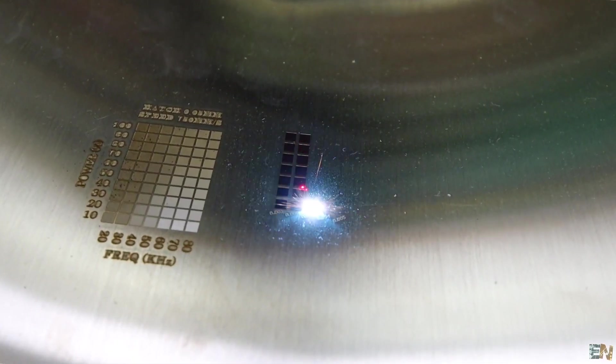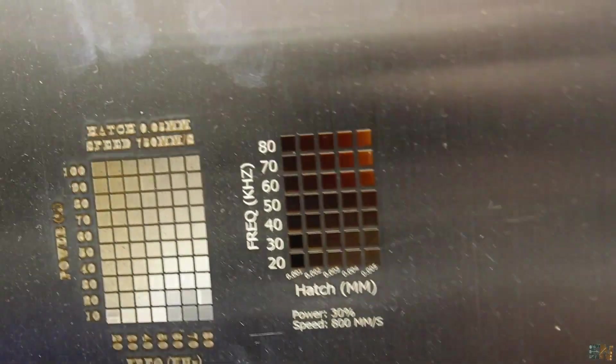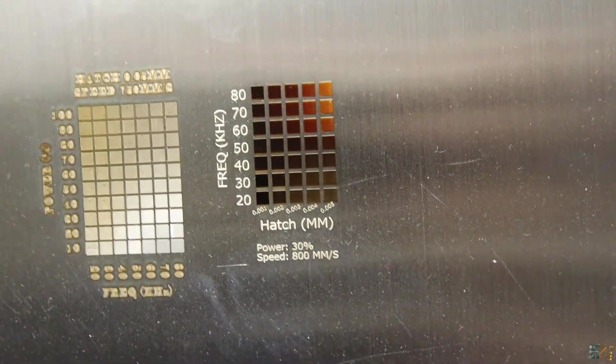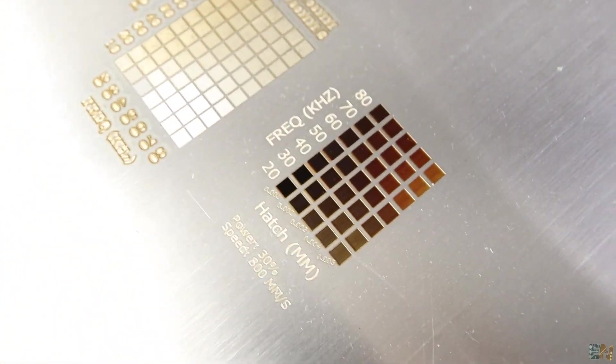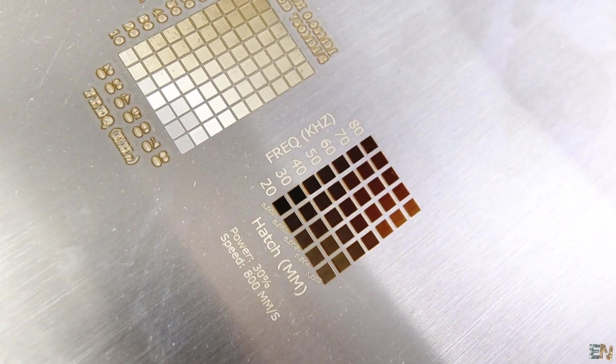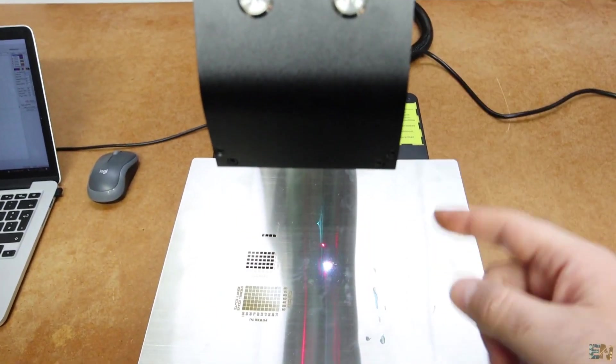The hatch value is basically how close the engraving lines are one to each other. As you can see here we change the hatch value and the distance between the lines is bigger or smaller. And again, depending on the used frequency, we can also change the color of the engraving on the metal. Look how beautiful it looks, from a black bluish color to even red colors. And the last test on stainless steel was power versus speed and these are the results.